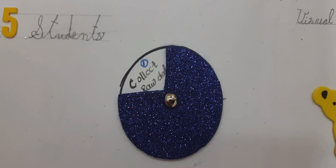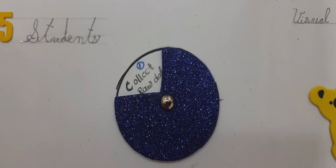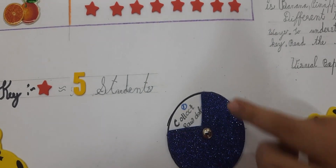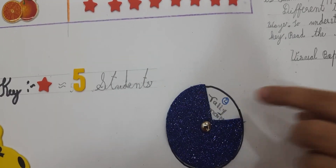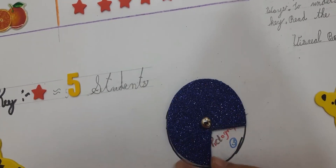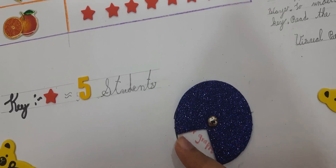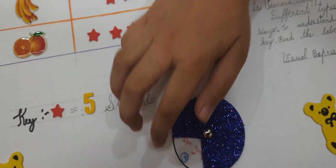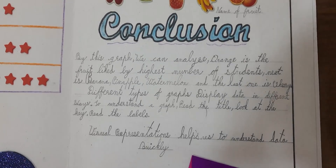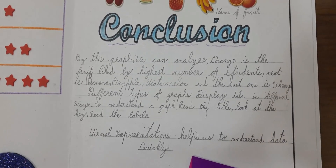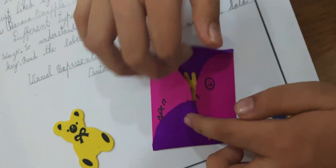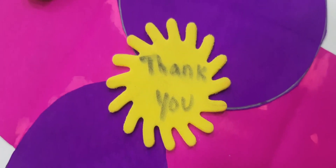Till now we have learned how to do data handling. Let's summarize: first we collect the raw data, then we organize it in tally marks, after that pictograph, and finally bar graph. With this we conclude the visual representation. Visual representation helps us to understand data quickly. Thank you.